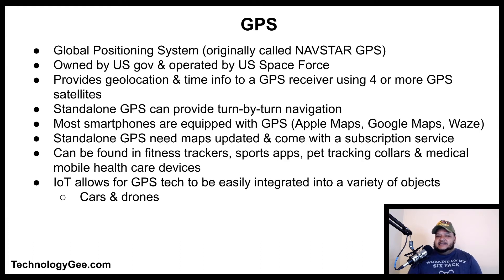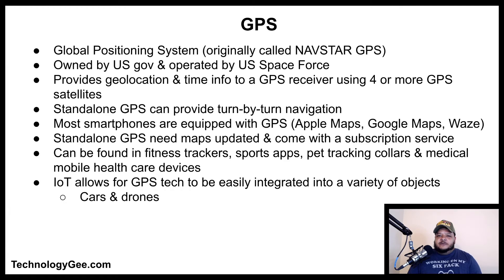The Global Positioning System, also known as GPS — originally called NAVSTAR GPS — is a satellite-based radio navigation system owned by the United States government and operated by the United States Space Force. It is one of the global navigation satellite systems that provides geolocation and time information to a GPS receiver anywhere on or near the Earth where there is an unobstructed line of sight to four or more GPS satellites.